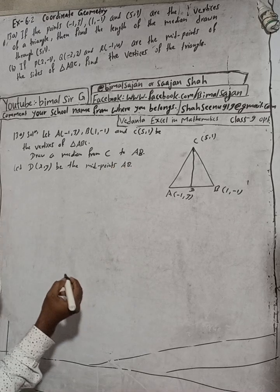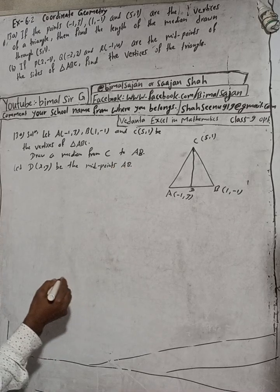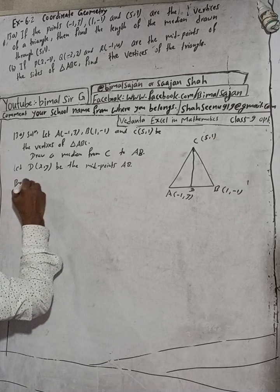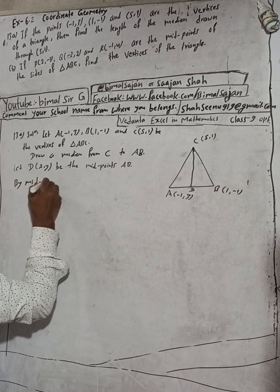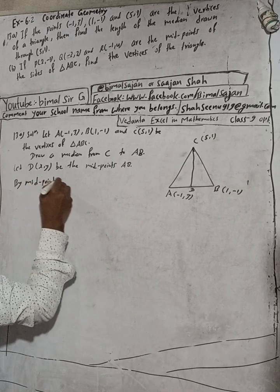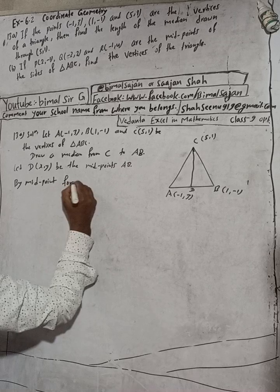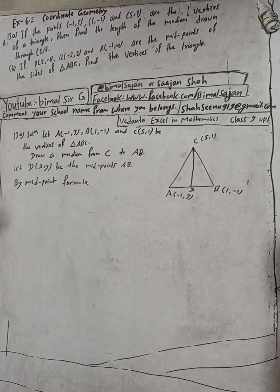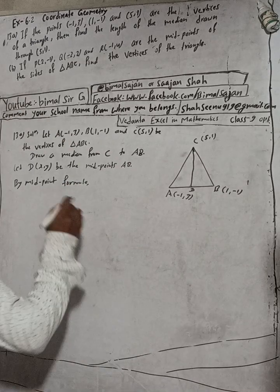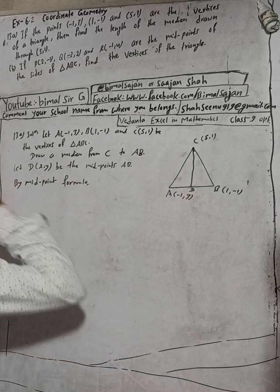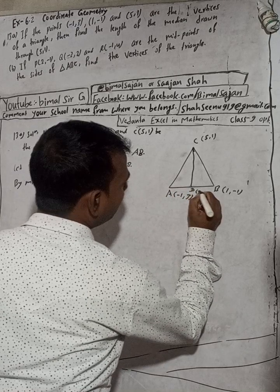Now we can find the midpoint. By the midpoint formula, we can find point D, the midpoint of AB. Here you can write D(x, y).